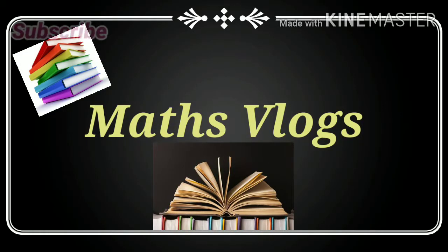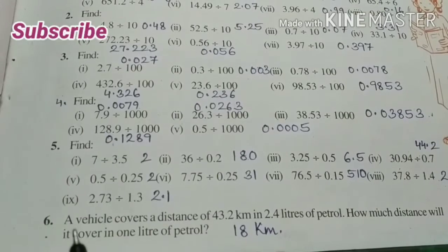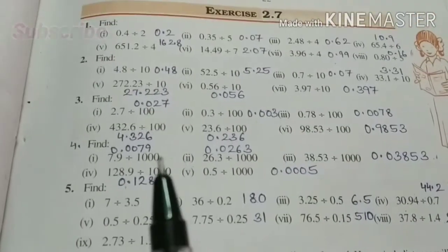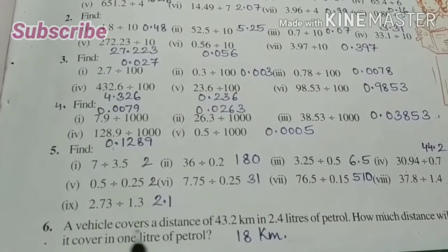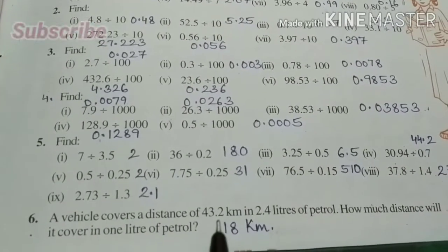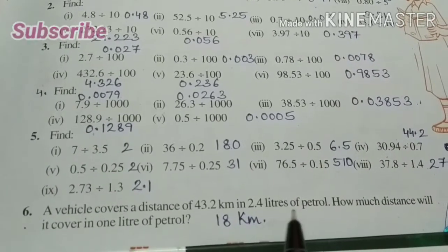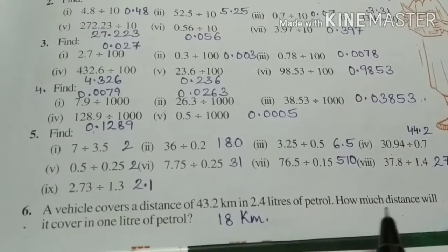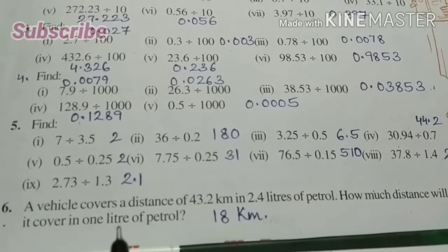Hello everyone, welcome to Maths Vlog. Today let us solve the last question of Exercise 2.7, Question Number 6. A vehicle covers a distance of 43.2 kilometers in 2.4 liters of petrol. How much distance will it cover in one liter of petrol?